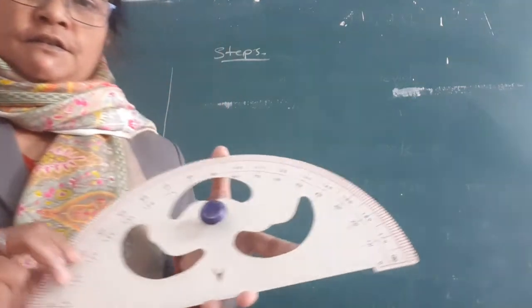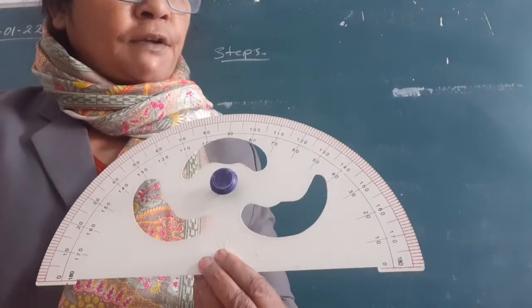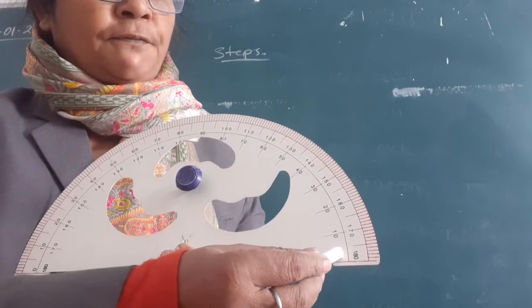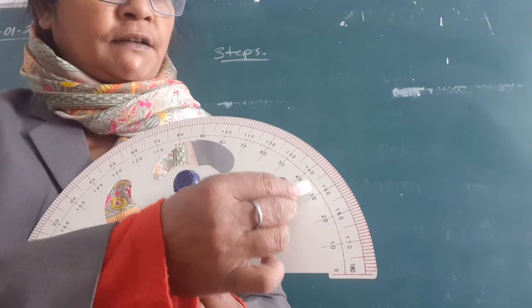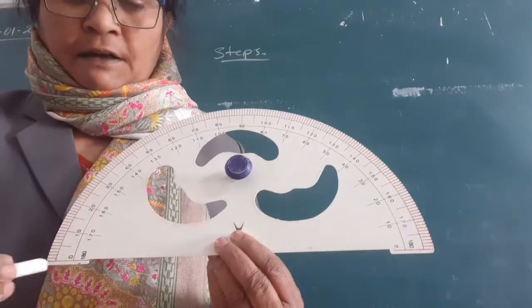Now, this protractor you are having. Whenever you have to calculate the measurement of an angle, you always begin from 0, 10, 20, 30, 40, 50, 60, 70, 80, and 180.